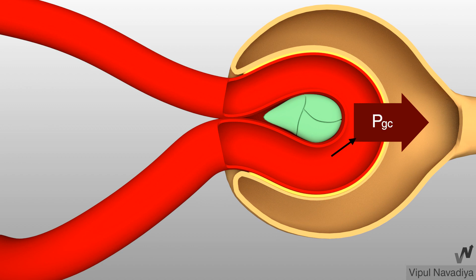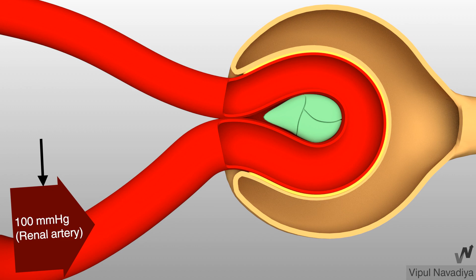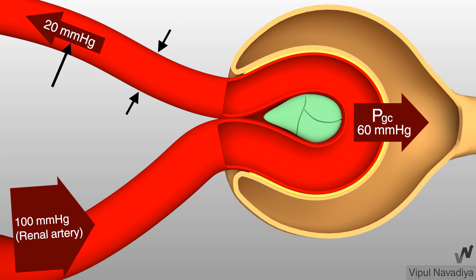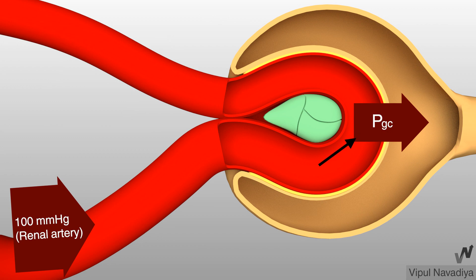Glomerular hydrostatic pressure is basically blood pressure in the glomerulus. Pressure in the renal artery is about 100 mmHg. Because of resistance at the afferent arterioles, the pressure in the glomerulus falls to 60 mmHg. And because of efferent arteriole resistance, pressure further drops to 20 mmHg in the peritubular capillaries.